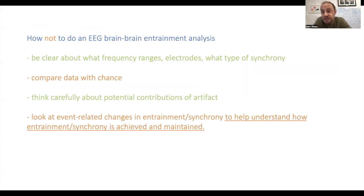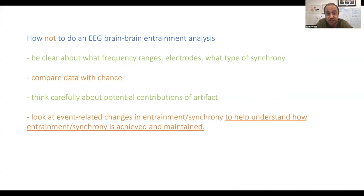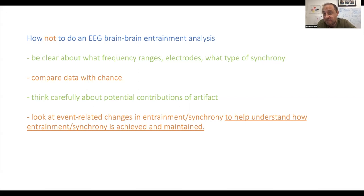To summarise the 'how not to do it' section: it's really important to clearly pre-specify what frequency ranges, electrodes, and type of synchrony you're going to measure — because they're not all the same thing and they don't associate with each other. Really important to compare your observed entrainment with chance as well as between conditions. Really important to think carefully about potential contributions of artefact, because we can't get it out of the data — nobody can. And the main point: looking at event-related changes in entrainment synchrony is the way to understand how entrainment is achieved and maintained, and EEG with its very fast time resolution is the measure that will allow us to do that.